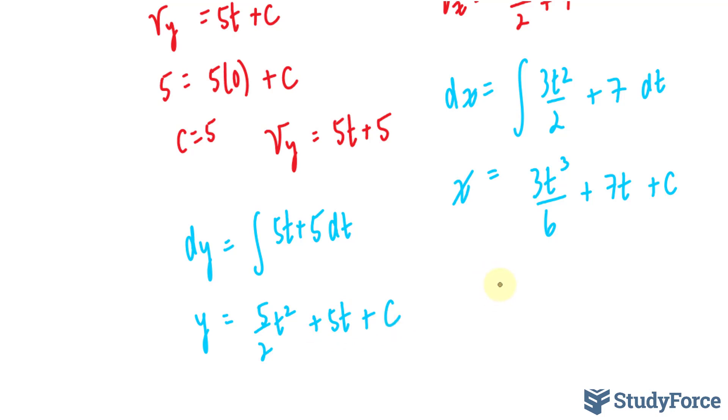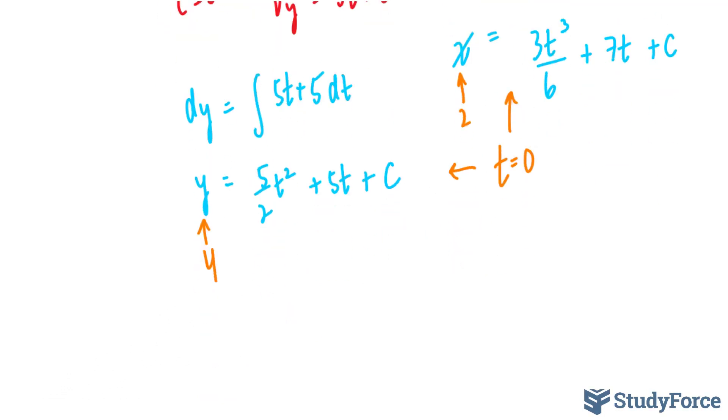Now I will substitute t equals 0 into this equation and into this equation. Substitute y equals 4 here, and over here I'll substitute 2. Let's go ahead and do that. We have 4 equals 5 times 0 squared over 2, which is 0, plus 5 times 0 is 0, so 4 equals c.